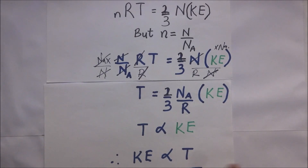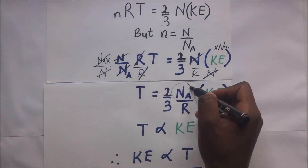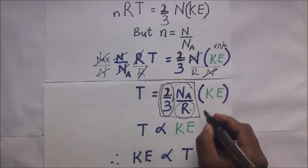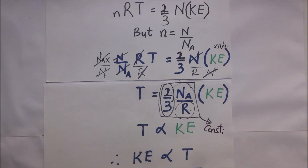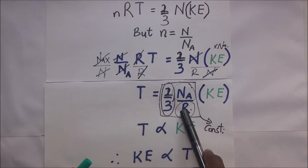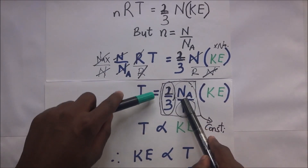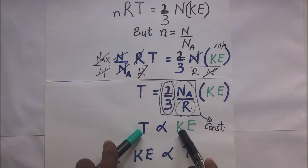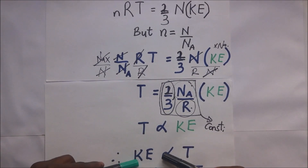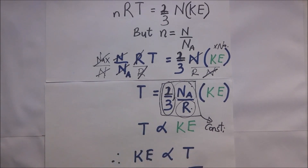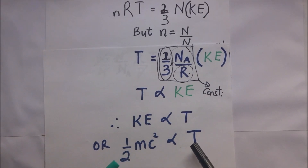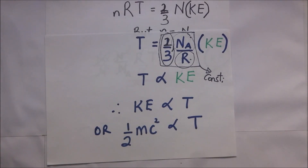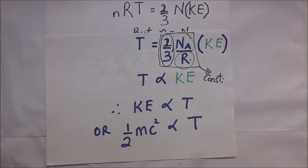You realize that two-thirds, Avogadro's constant Nₐ, and R the molar gas constant are all constants. Since they are all constants, they can all be expressed in terms of K, just a constant. To remove the equals sign we introduce a proportionality sign, and we find that temperature T is directly proportional to kinetic energy — or equivalently, kinetic energy is directly proportional to temperature. Kinetic energy, which is one-half mC squared, is directly proportional to temperature. We have been able to show that the average kinetic energy of the gas molecule in motion within a container is directly proportional to the absolute temperature.